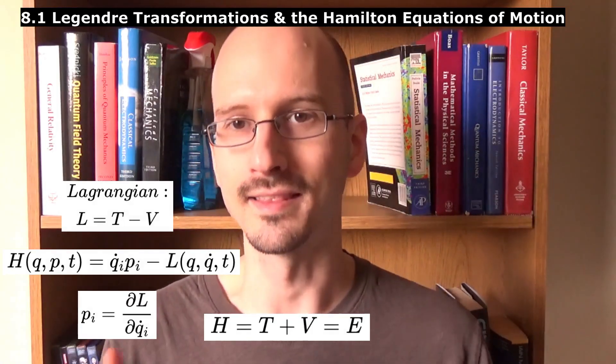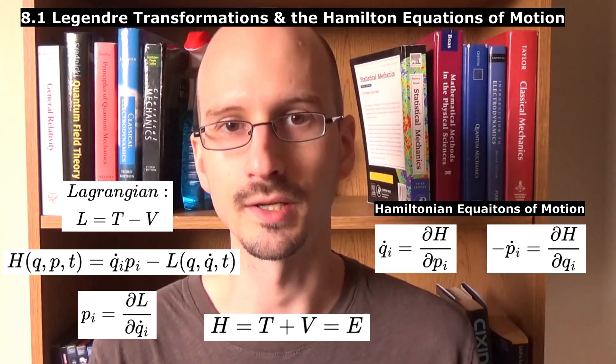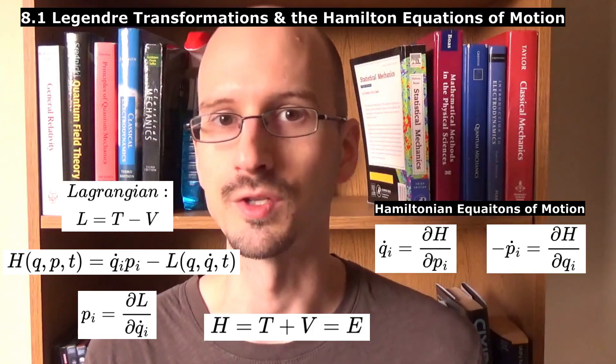The book then states these as the canonical equations of Hamiltonian, or the Hamiltonian equations of motion. It waits to justify them until later, so we will do that as well.